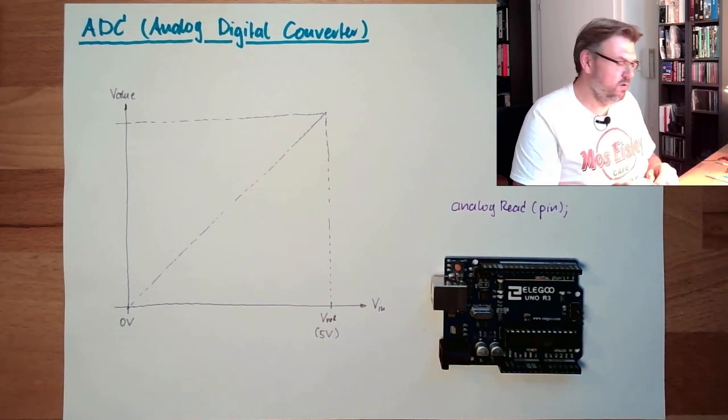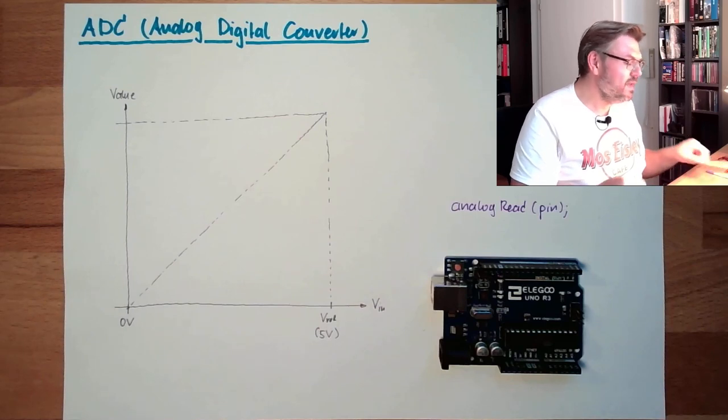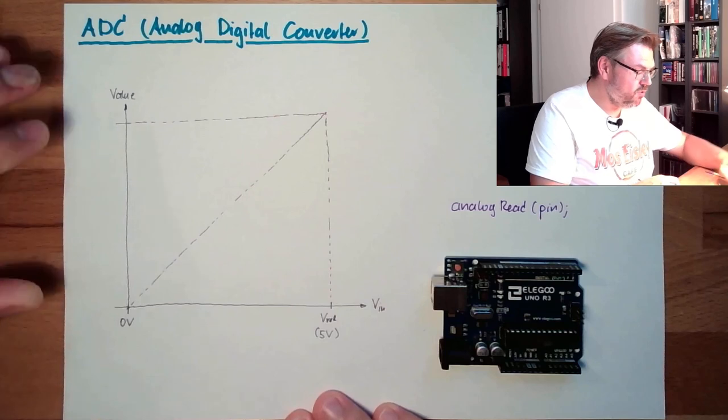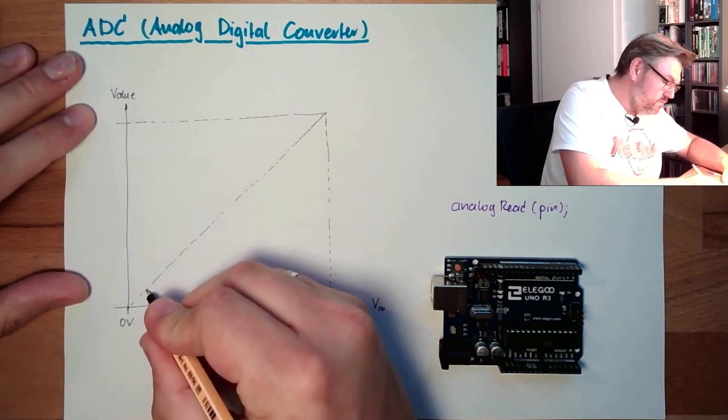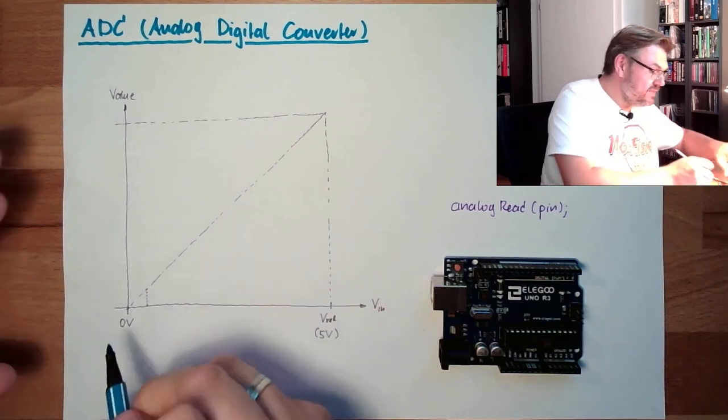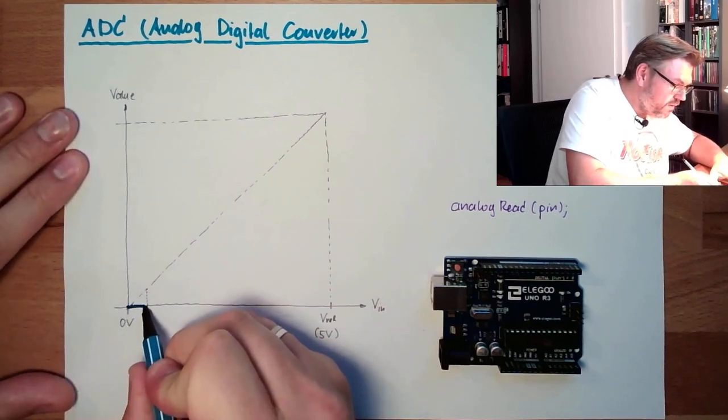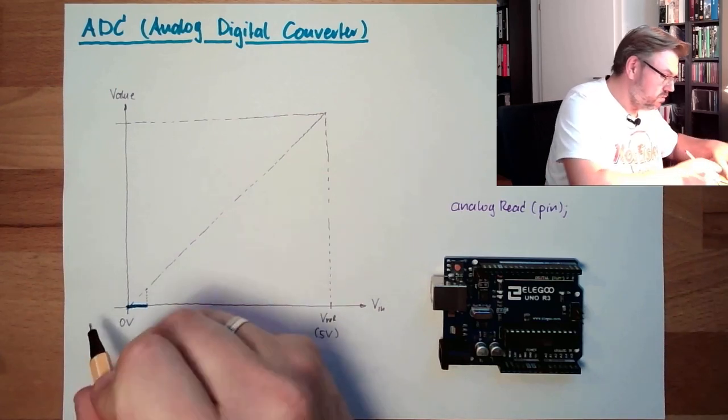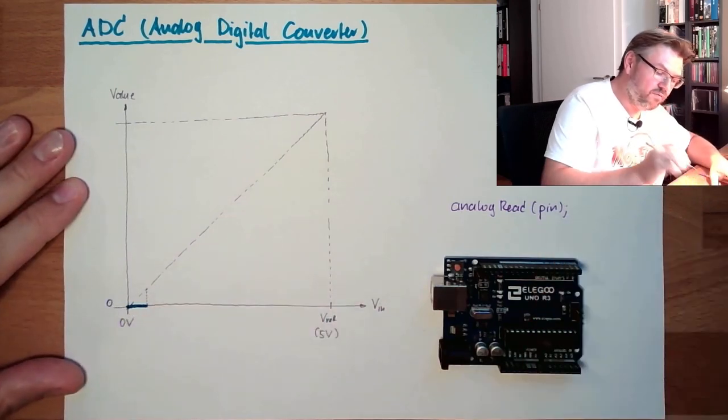What does it mean, this number? Well, if the input is within a range between 0 and a certain value, the number is 0. So we have here, the number is 0, which I am getting back of this analogRead.